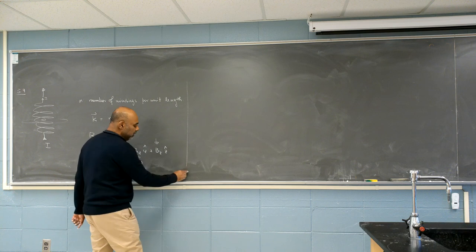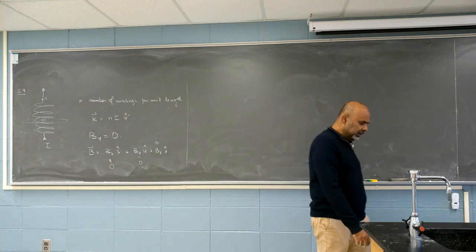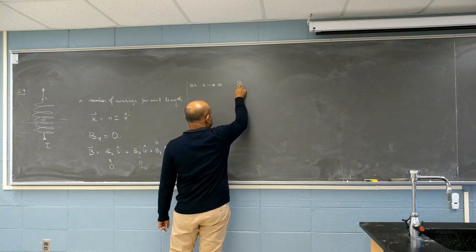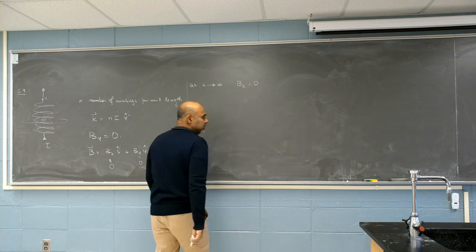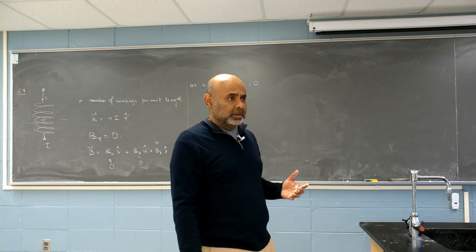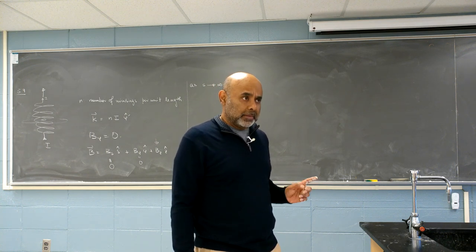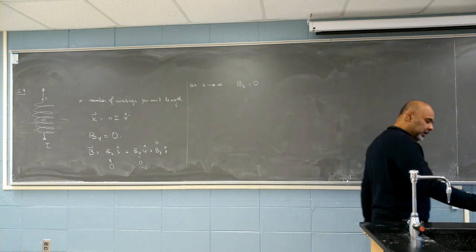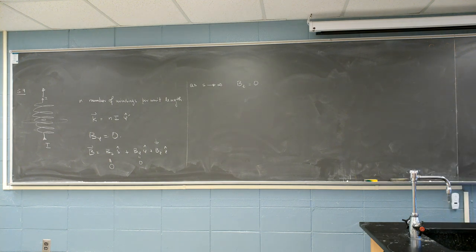And this one, he just states, maybe Griffiths has a little more intuition. He says, as S approaches infinity, BZ equal to zero. That seems very plausible if it's a finite solenoid. But this is an infinitely long solenoid. And I couldn't think of an immediate way. Moreover, it certainly approaches zero as you go very, very far away. It doesn't even say very very, just very far away.